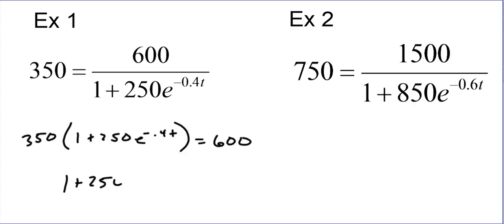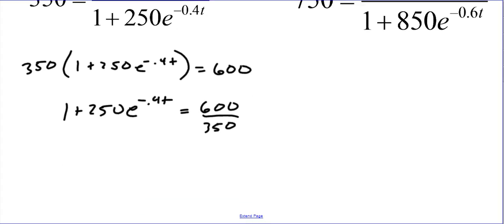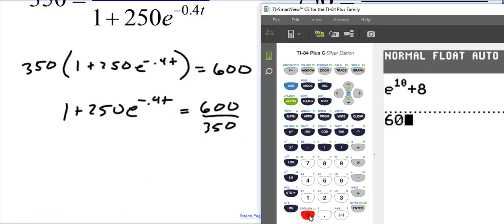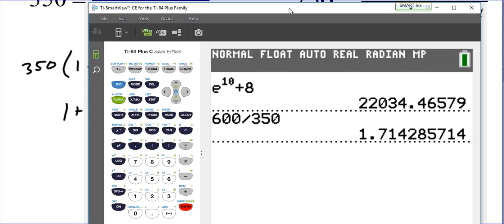So now I have 1 plus 250 e to the negative 0.4t equals 600 divided by 350. From here, we can make this a little bit nicer. If you're not sure what 600 divided by 350 is, you can take your calculator. 600 divided by 350, that's going to give us the answer. You can go into fraction form and you get a nice little fraction here, 12 over 7.